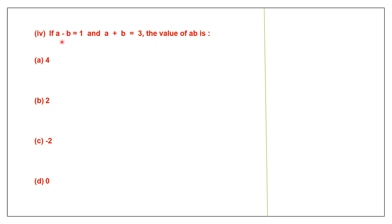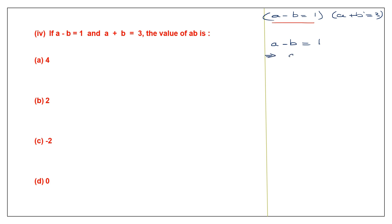Question 4: if A minus B equals 1 and A plus B equals 3, find the value of AB. We take the first equation A minus B equals 1 and find A in terms of B. Moving minus B to the other side, A equals 1 plus B. We'll call this equation 1.